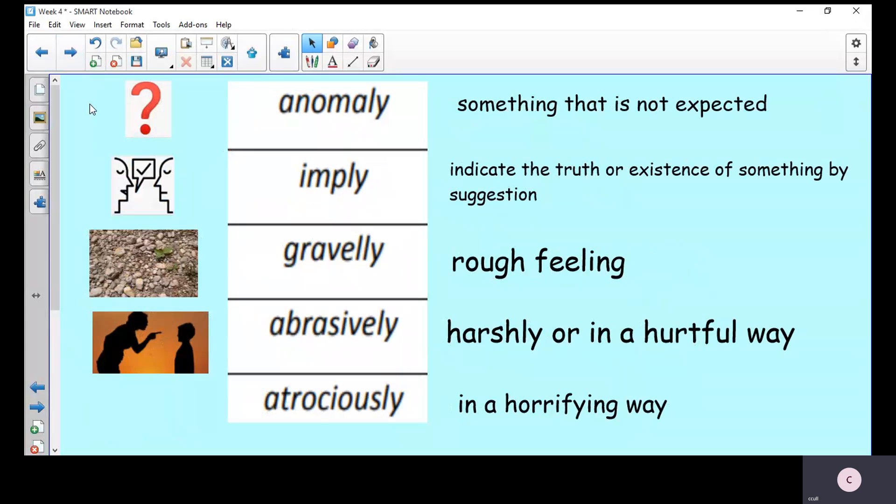Anomaly. Something that is not expected. Sometimes if scientists do an experiment and there's one result that's a little different from the others, this is referred to as an anomaly. Something that's not expected.